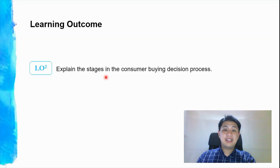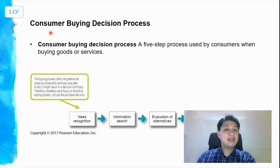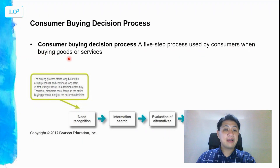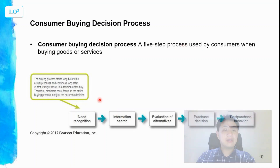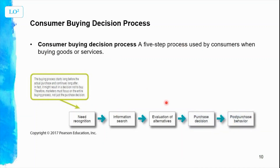In this video we're going to explain the stages in the consumer buying decision process. It is a five-step process used by consumers when buying goods or services. Unconsciously, when we make a purchase, we will go through these five steps: need recognition, information search, evaluation of alternatives, purchase decision, and post-purchase behavior.